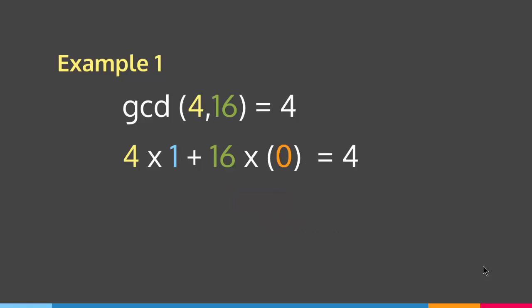I can also put x=1 and y=0, because 4 times 1 equals 4 and 16 times 0 equals 0, so 4 plus 0 equals 4, which is the greatest common divisor. So 1 and 0 could also be Bézout's coefficients. And this is basically Bézout's identity.